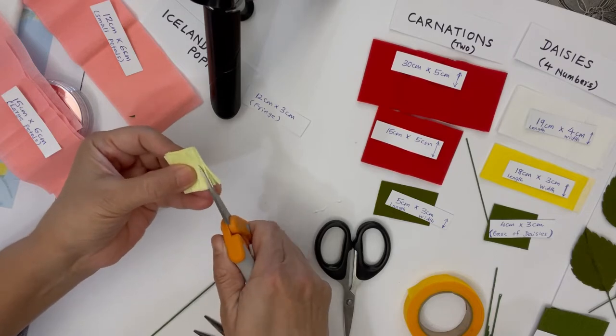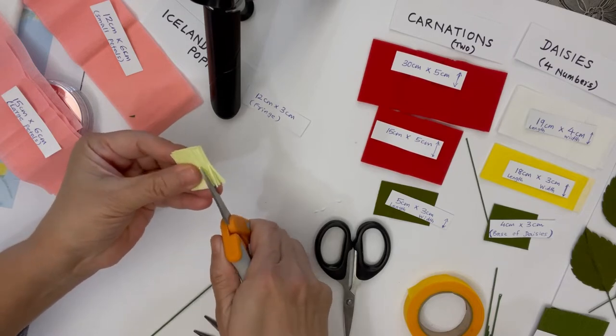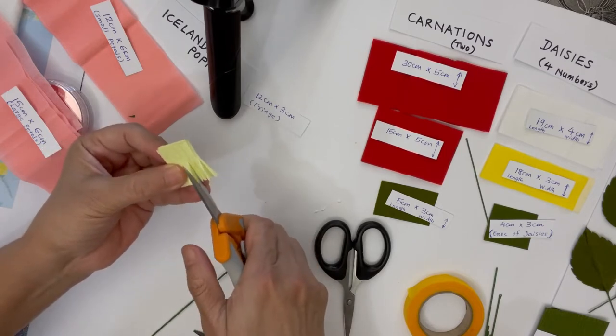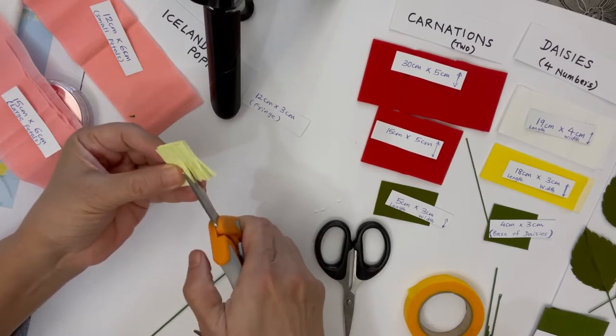Then cut it. I usually like to use fringing scissors for cutting the fringes. It's much easier and faster. Just make fringe, but don't cut it across the paper—just around half to three-fourths of the paper.